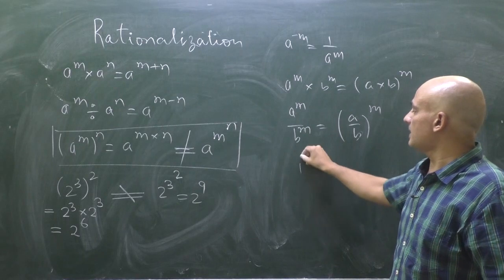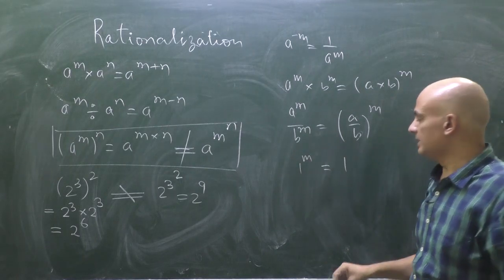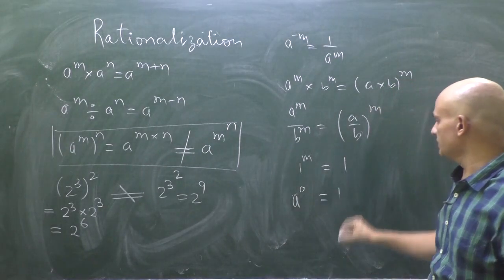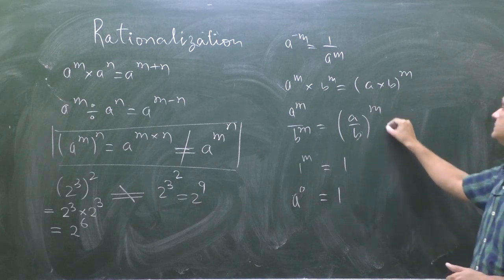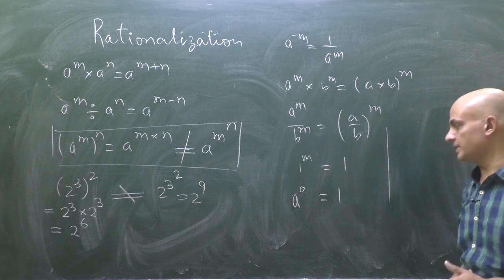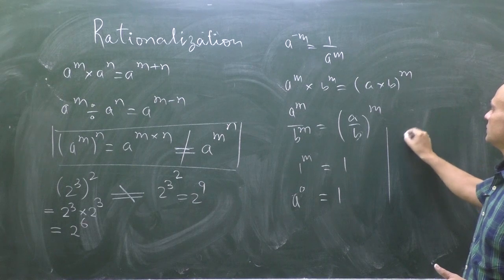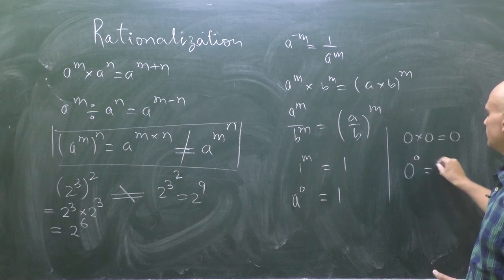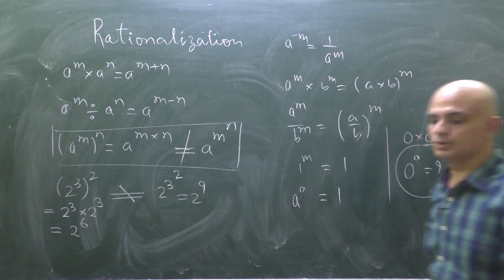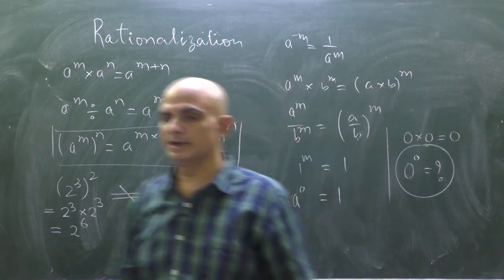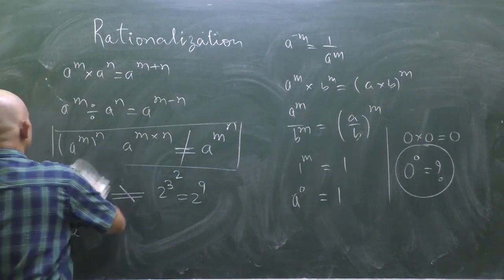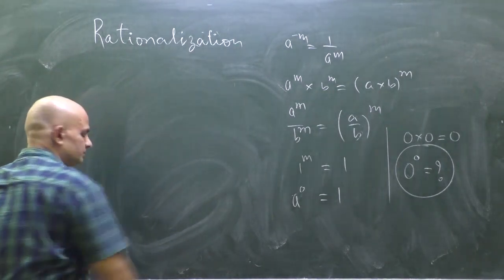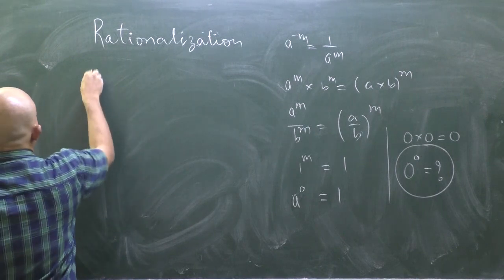One to the power m is 1. Any number a to the power 0 is 1. And here is a brainstorming question for you: what is 0 to the power 0? Search it — what is 0 to the power 0?